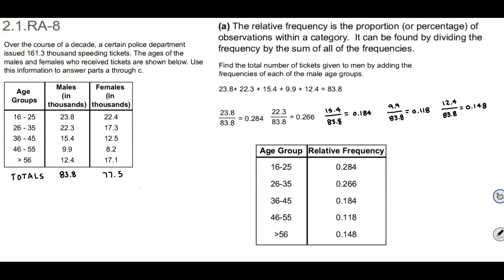Okay, in section 2.1.RA-8 interactive assignment, over the course of a decade, a certain police department issued 161.3 thousand speeding tickets. The ages of the females and males who received tickets are shown below. Use this information to answer parts A through C.